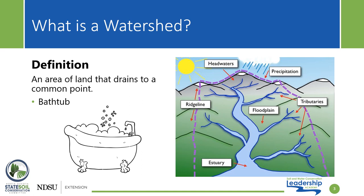Let's start by defining what is a watershed. By definition, a watershed is an area of land that drains to a common point. You can think of it much like a bathtub — any drop of water that falls in that tub will eventually drain to one common point. On the right-hand side of your screen, you will see a depiction of a watershed with its labeled parts, including the ridgeline, which separates watersheds from each other, as well as estuaries and the floodplain, where water drains to the common point — in this case, the estuary.